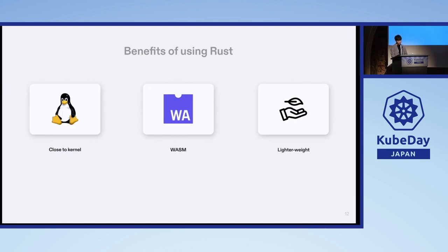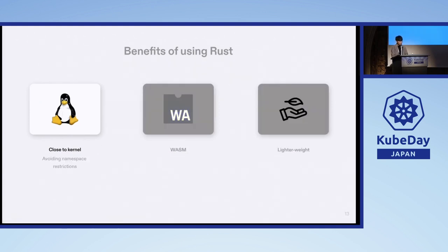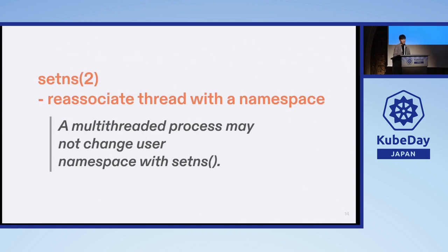Rust is a lightweight language in terms of execution speed and memory footprint, so there are advantages there as well. This talk will focus on one system call: setNS, which allows you to associate a thread with the namespace mentioned before. For example, you might use the exec command to enter a container. In the context of namespaces, you are joining an existing container by linking a new process to its namespace. However, there is a limitation to this system call: it cannot be used in a multi-threaded environment.